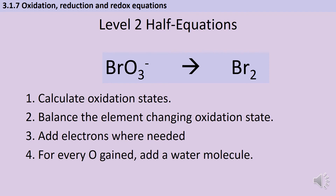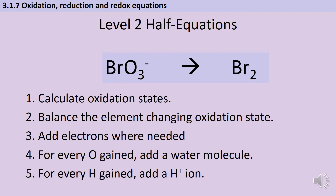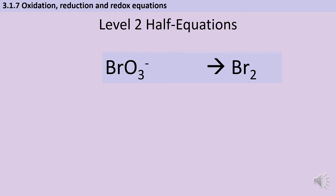Then we're going to add electrons wherever they're needed to counteract the change in oxidation state. For every oxygen present we're going to need to add a water molecule on the opposite side. Here I've got three oxygens per bromate ion, which would suggest three water molecules on the right — though once bromine is balanced it'll end up being six. And because adding water means adding hydrogen, we'll then need to add hydrogen ions on the other side to make this all balance out. So let's now look at this in practice.